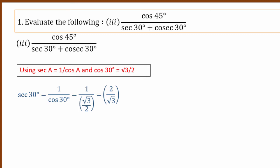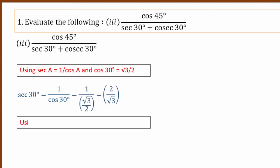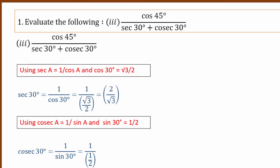What is cosecant 30? Cosecant a is 1 divided by sin a. Sin 30 is half, so cosecant 30 is 1 divided by half, which equals 2 by 1, so cosecant 30 equals 2.